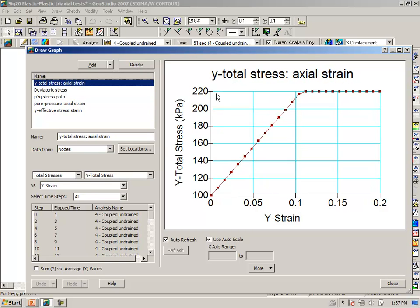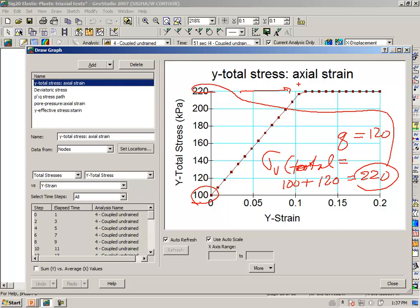Now we know that we consolidated the sample to 100 kPa at zero pore pressure. So the vertical stress and horizontal stress were the same at the initial confining stress. We know from the previous discussion that the deviatoric stress is equal to 120 kPa. Therefore, sigma vertical total must be equal to 100 plus 120 is equal to 220. And indeed, that's what the test shows. We're getting a total vertical stress in our triaxial sample of 220.